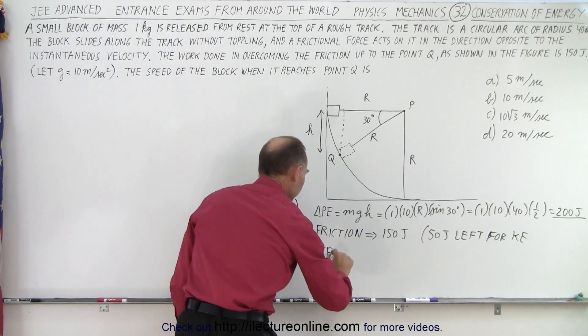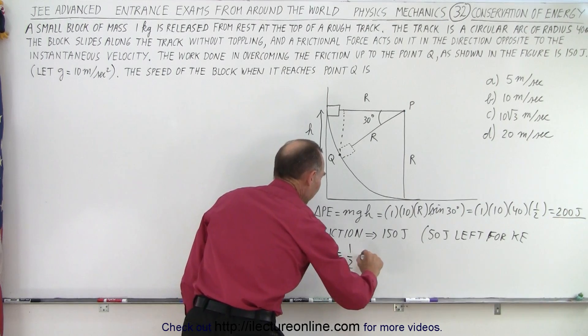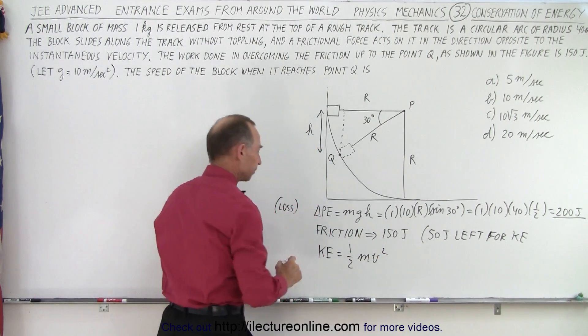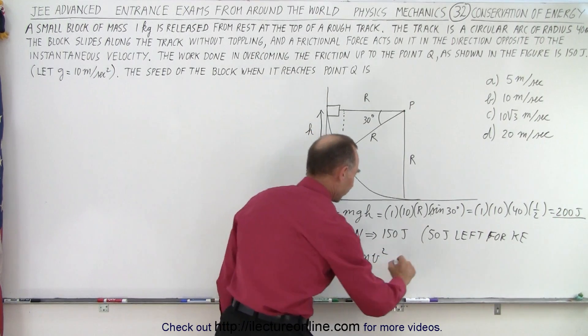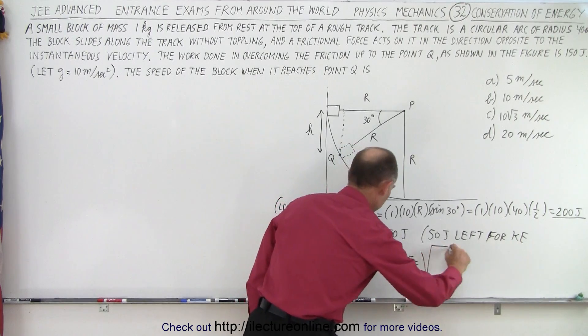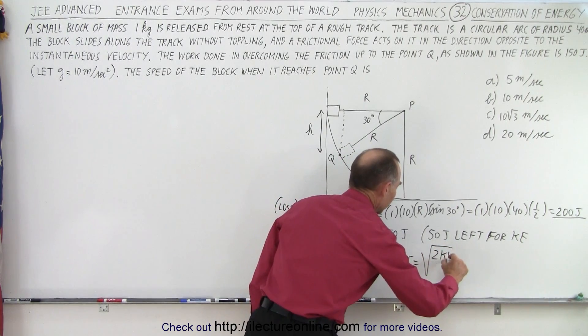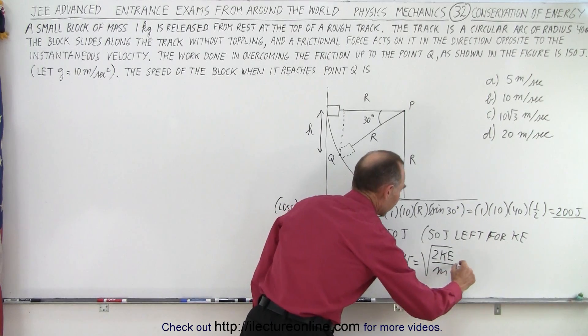So we can say that kinetic energy is equal to one half mv squared. So from here we can solve this for v. So v is equal to the square root of twice the kinetic energy divided by m, the mass.